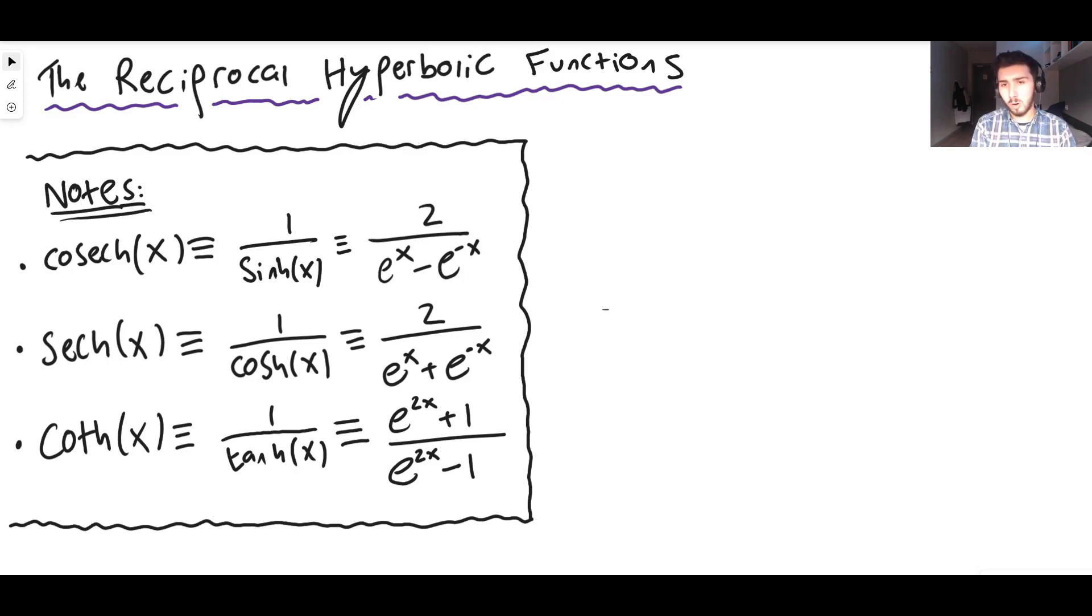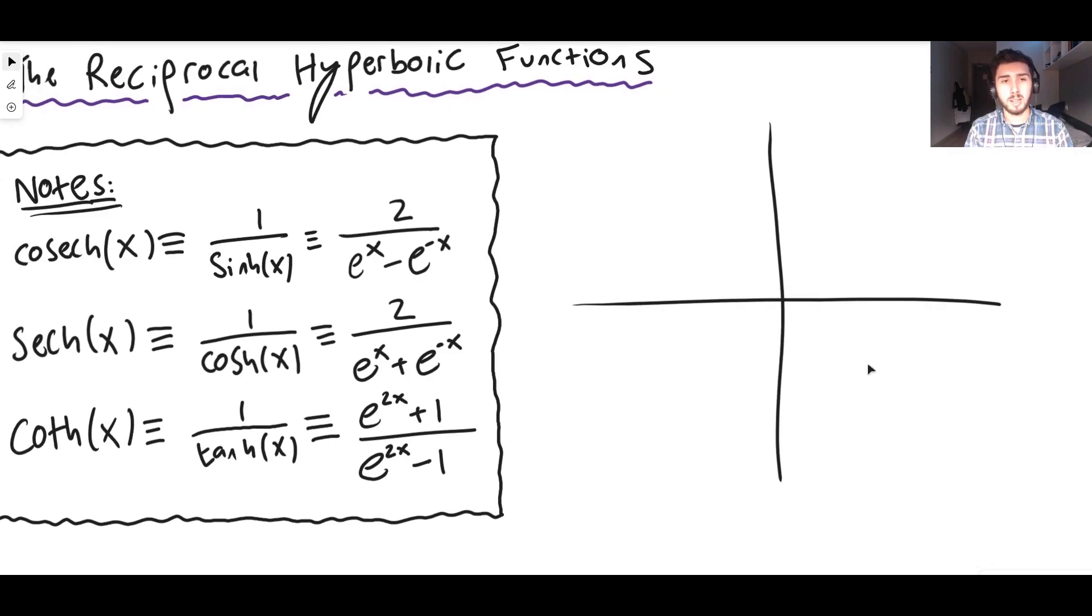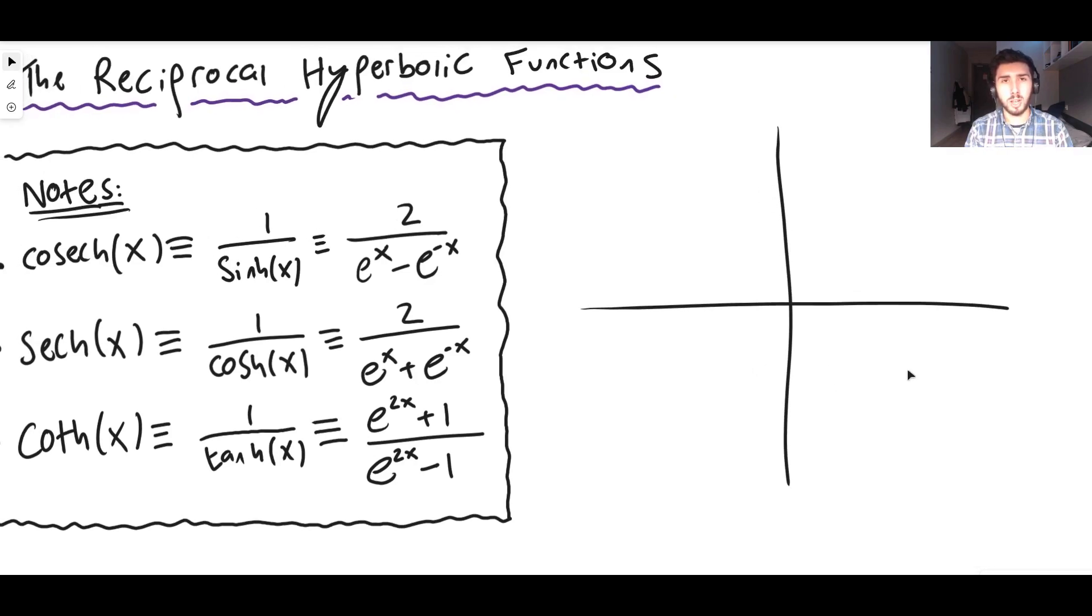Now let's look at the graphs of cosech, sech and coth. Okay so the first one let's do cosech x. Based on the fact that, and what I'm going to do is I'm going to draw the original trig function. Let's do it.